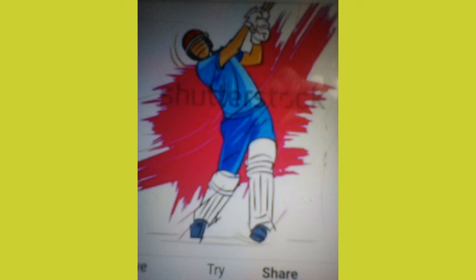No. 5: Feroz Shah Kotla Ground, capacity 55,000, located in Delhi. Also: Sardar Patel Ground, capacity 55,000, located in Gujarat.